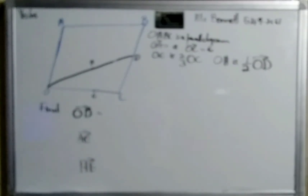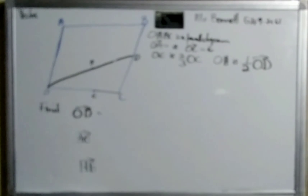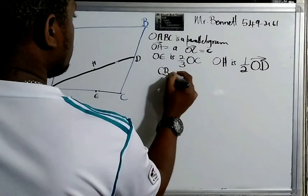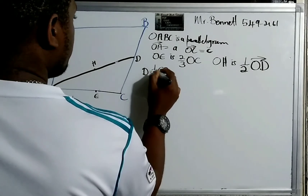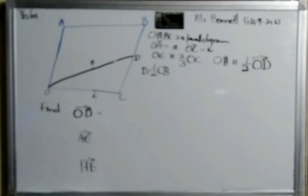It says: OABC is a parallelogram such that OA is equal to a, OC is equal to c, and OH is two-thirds of OC. Also, D is half of CB. They ask us to find OD. All right, let's just put the information first.